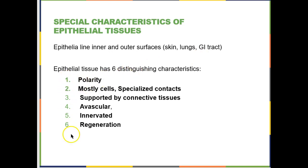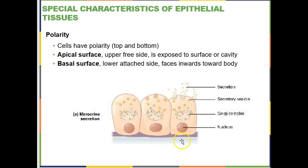All of the epithelia have six different characteristics. In the file posted, polarity is listed separately — that's a typo you should fix on your slides. First up: polarity. This is not what your skin looks like here, but let's imagine I chose a picture of skin. The surface of your skin isn't attached to anything because it's on the surface.